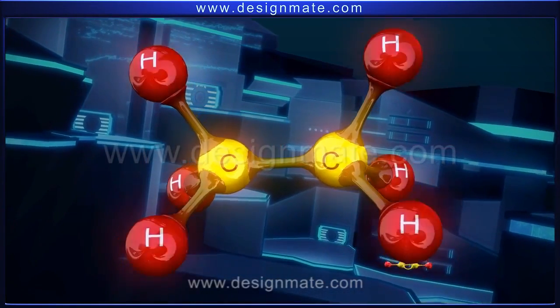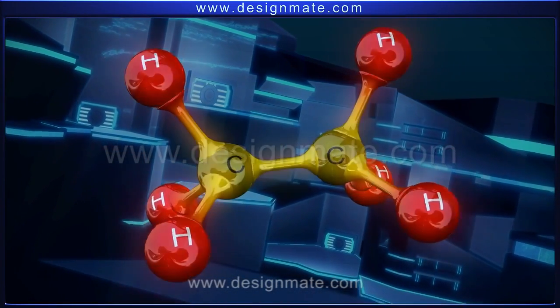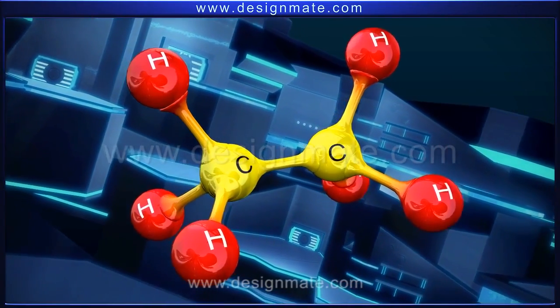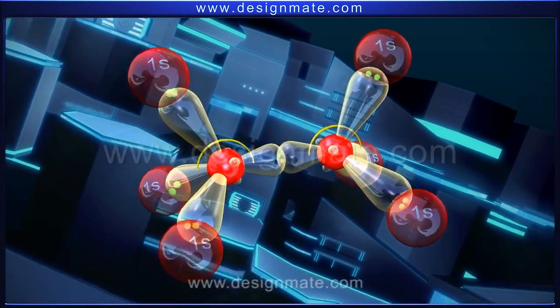There are two carbon atoms and six hydrogen atoms joined by single bonds in this molecule. The orbital picture of ethane looks like this.